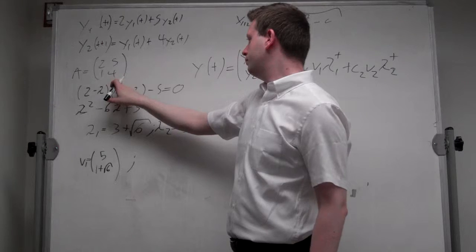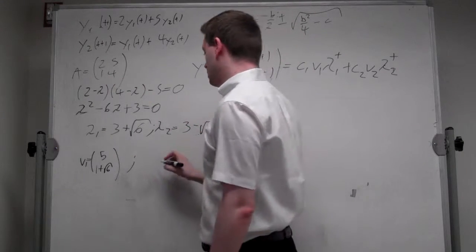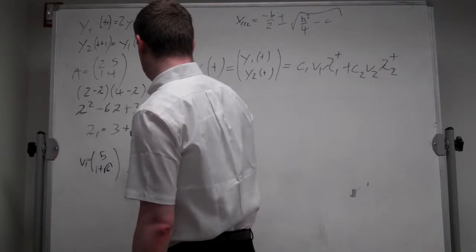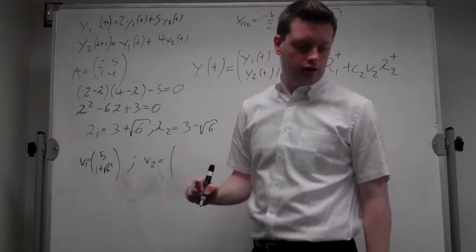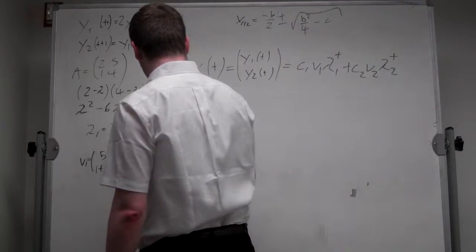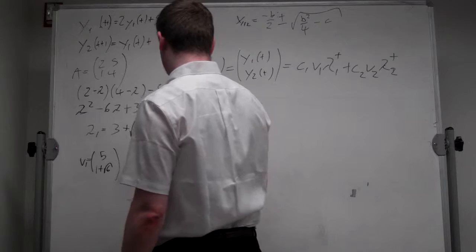And we can get the second eigenvector, which will be equal to 5, 1 minus square root of 6.